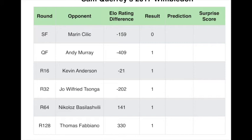Based on his ELO rating at the start of the event, we give a zero for a loss and ones for wins. Using the formula we saw just a bit ago, we can fill in our prediction column — based on those ratings in the center we get a prediction for each of those matches. All we do then is take our result column minus that prediction column to get an overall surprise score for every match.